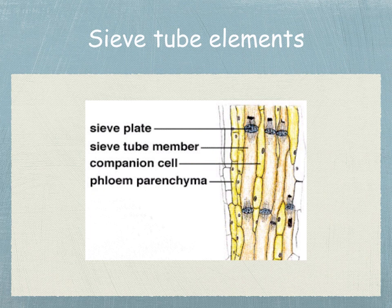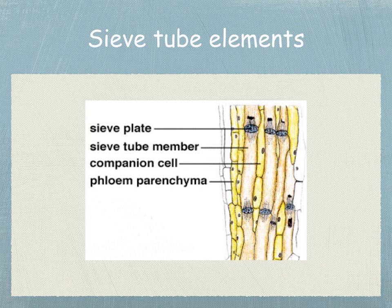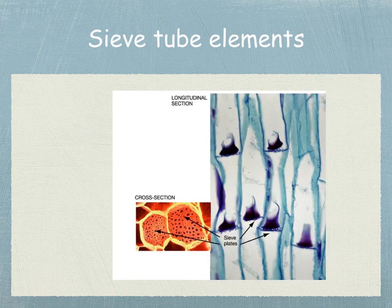Here's another image of sieve tube elements. You can see that they're elongated cells with perforated end walls. These are enlarged plasmodesmata and they form sieve plates. The nuclei have degenerated and the cytoplasm forms a thin peripheral layer. The cytoplasm is actually continuous through the sieve plates, and notice how there's no vacuole. In this picture you can also see the phloem parenchyma between the cells. It's quite difficult to see sieve plates in cross-section, so this is an electron micrograph showing the large pits. There is a substance called callose around the sieve plates, which may help block off channels when damage occurs.